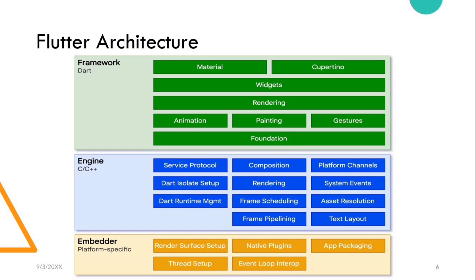After this, we have the widgets layer. The widget layer is a composition abstraction — each rendered object in the rendering layer has a corresponding class in the widgets layer, and this is the layer at which the reactive programming model is introduced. After this, we have the Material and Cupertino libraries, which offer a comprehensive set of controls that use the widget layer's composition primitives to implement the Material or iOS design languages.